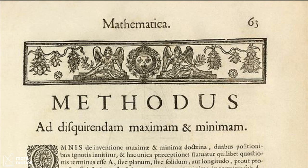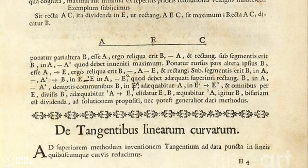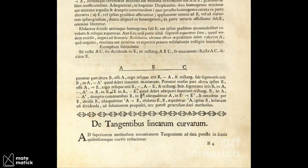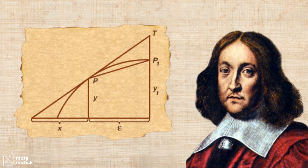In his manuscript, Methodus ad discorandum maximum ad minimum, circulated around 1636, Fermat laid the groundwork for analytic geometry. He developed methods for finding maxima, minima, and tangents to curves, akin to today's differential calculus, preceding Descartes' famous work.